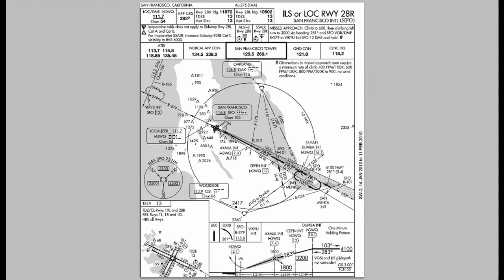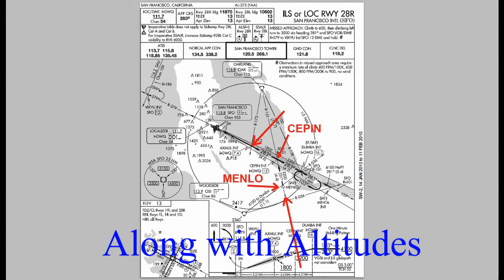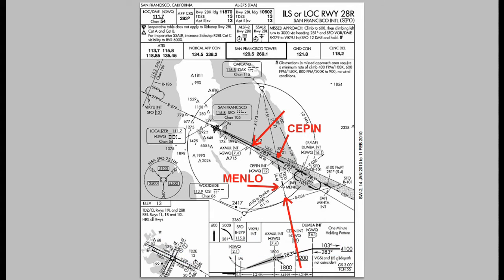Now we are ready to pick up the final approach. This is where the Big Sur 2 arrival meets with the 28R approach plate. Back on the approach plate, here is the route we have been flying on our STAR, and we are getting to our last fix which is Menlo. Notice that Menlo is an IAF — an initial approach fix for runway 28R. Continuing on a heading of 331, we will come to the Seepin fix, make a left turn on our final approach down to Axe Mule, and then land. Those are the waypoints we are going to enter — this is how you add an approach to your flight plan.